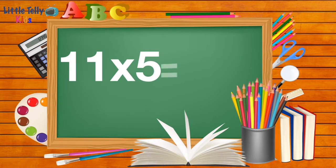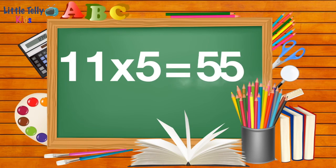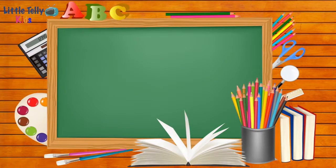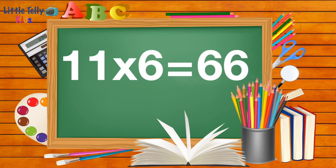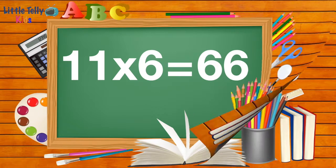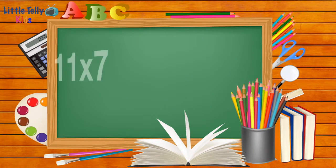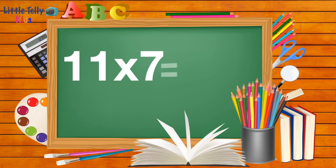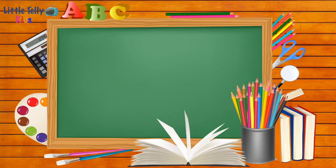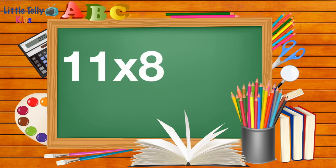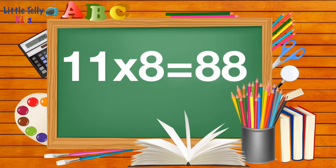Eleven fives are fifty-five. Eleven sixes are sixty-six. Eleven sevens are seventy-seven. Eleven eights are eighty-eight.